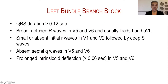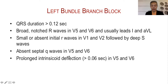This is an obligatory criterion. You see the broadening and notching in V5 and V6, and sometimes in lead I and AVL as well. The other changes include small or absent initial R waves in V1 and V2 followed by deep S waves, absent septal Q waves in V5 and V6, and prolonged initial deflection of more than one and a half small squares in V5 and V6, meaning there is delay in conduction.